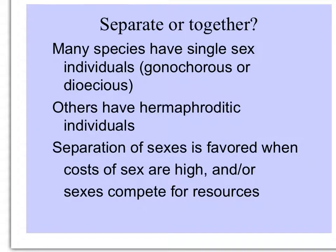We mentioned hermaphroditic individuals before — let's make some definitions. Species that have single-sex individuals are gonochorous, or we can also call them dioecious, meaning two houses. Others have hermaphroditic individuals with both sexes. So why have separate sexes?